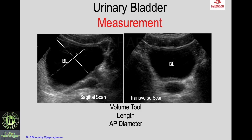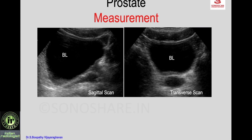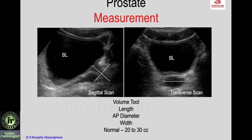Urinary bladder volume measurement is done using the volume tool: the length (craniocaudal) and AP diameter are taken in the sagittal scan, and the width in the transverse scan. Post-void residual urine normal is taken to be 20 to 30 cc. Prostate measurement similarly uses the volume tool — length and AP thickness in sagittal, width in transverse — normal volume is 20 to 30 cc, and size increases with age.